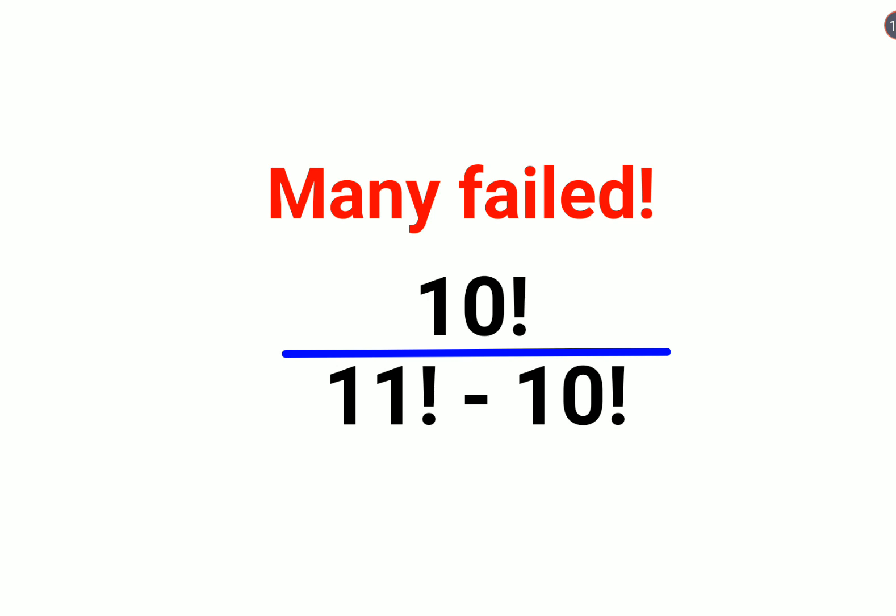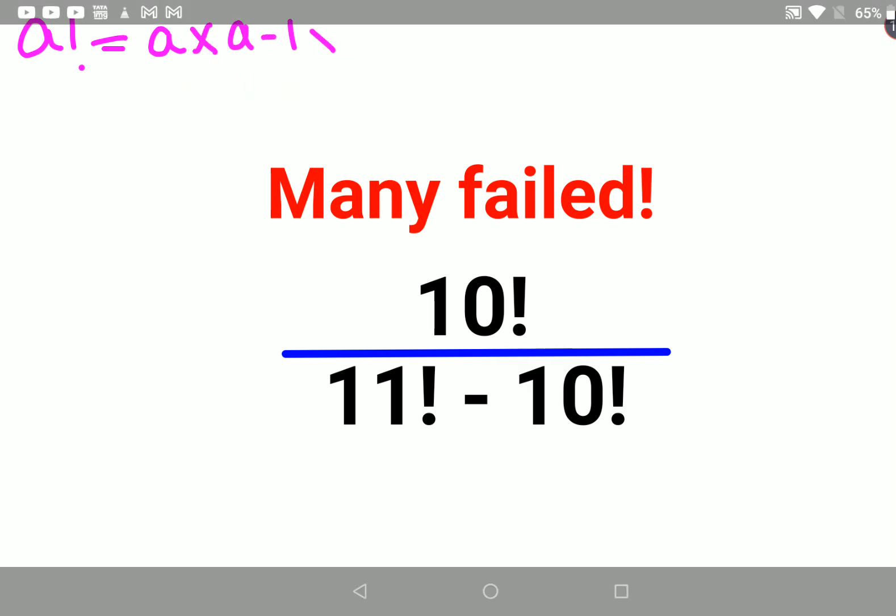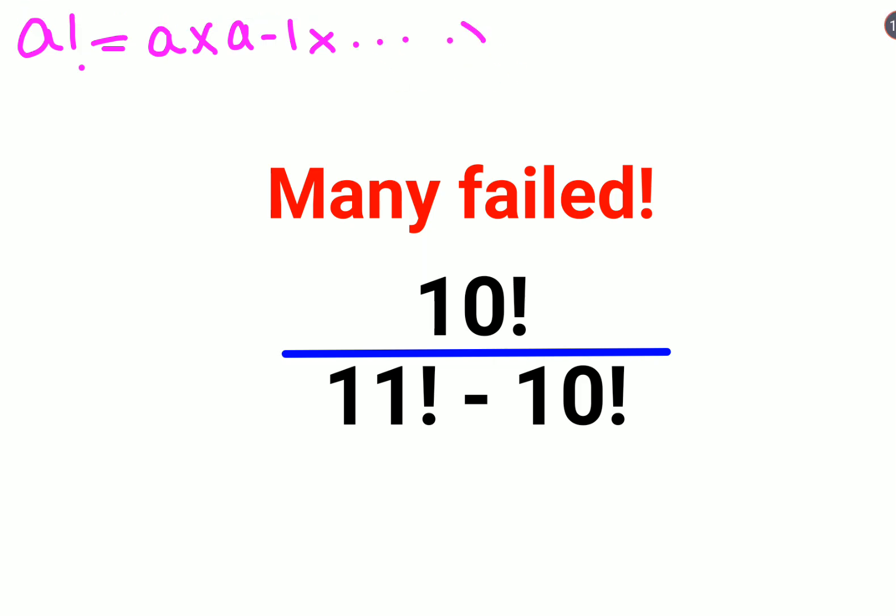So first, very important thing is that whenever you have a factorial or rather an exclamation sign ahead of a number, you can represent it mathematically by multiplying that number with the next consecutive number but in decreasing order until you reach the value of 1.